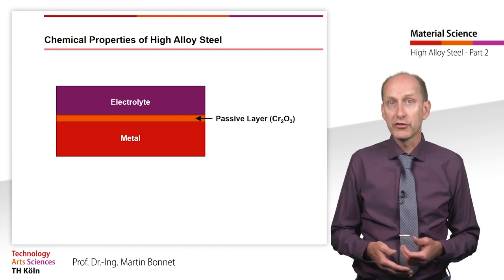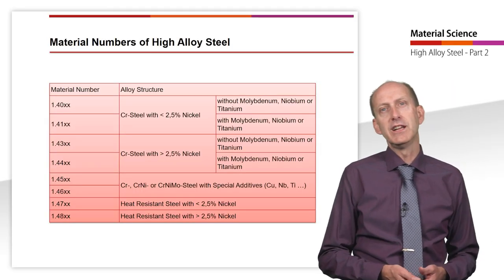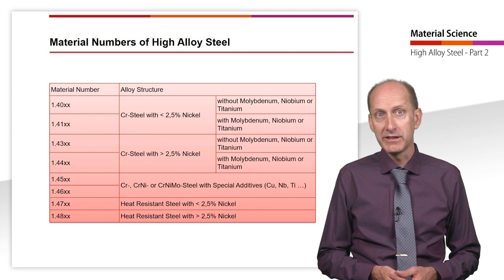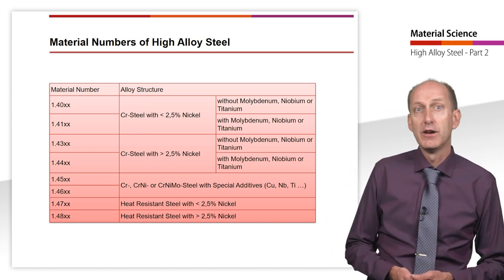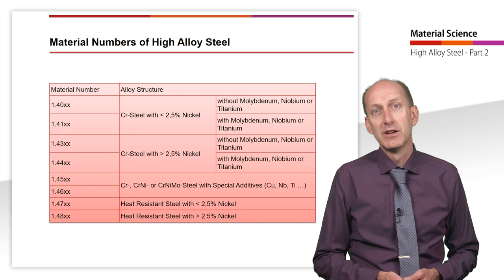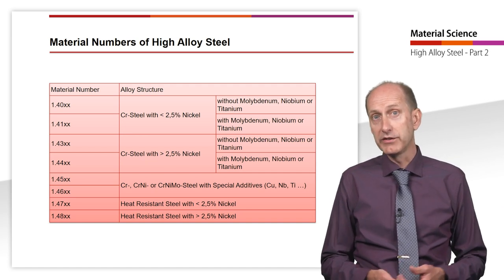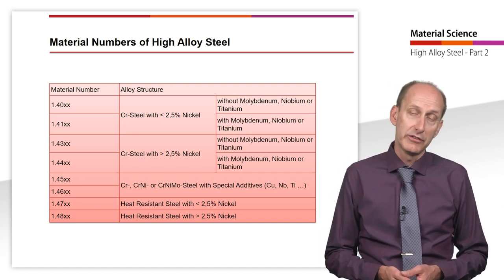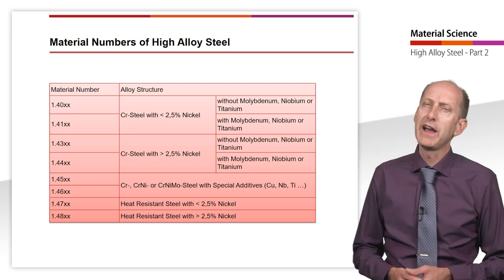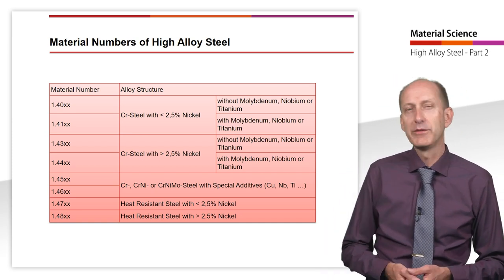Therefore, careful material selection and processing is critical for good corrosion resistance. Already in the videos on designation of steel, we learned about material numbers as a second designation in addition to abbreviated designations. We learned that the number 1 stands for the material steel. The two following digits usually allow conclusions to be drawn about the alloy structure. For example, 43 stands for chromium steel with a nickel content greater than 2.5%. The last two digits are sequence numbers for the steel belonging to this group. Especially in the field of high alloy steel, working with material numbers is common, as the short designations can sometimes be very long.